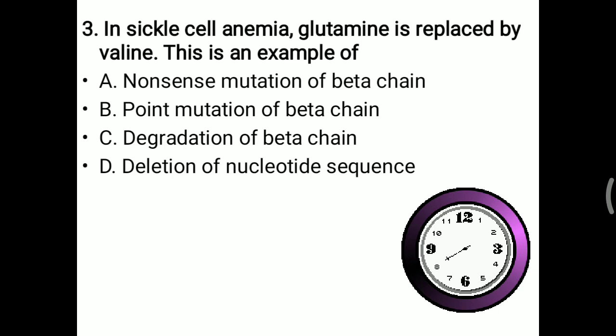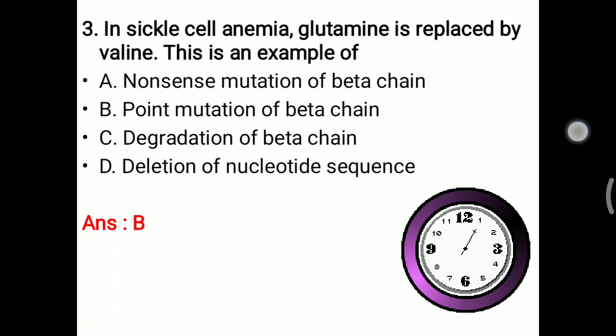Degradation of the beta chain is not occurring in sickle cell anemia. Deletion is also not correct — it is a replacement of a single nucleotide, not a sequence deletion. So the right answer is B — point mutation.